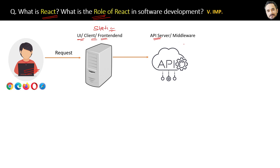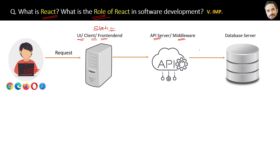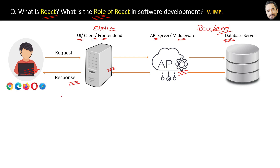For dynamic content, like the list of orders, this UI server will send the request to some API server. This API server is also called sometimes middleware, and it is responsible for processing the business logic and getting and posting the data from the database. This API server will then get, insert, or update the data inside the database server. Both these API servers and database servers together are also sometimes called backend. In the event of a GET, the database will respond with some data to the API, and then the API sends the data back to the client, which will then display the data to the user.